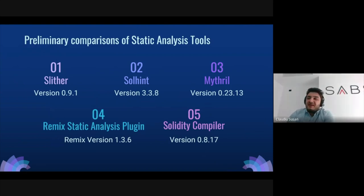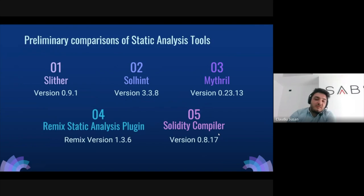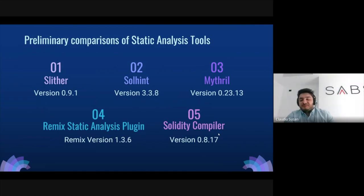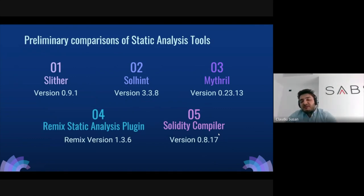We already tested some tools: Slither, Solhint, Mythril, and the static analysis plugin from Remix, along with the Solidity compiler. For a tool to qualify for our study, it had to fulfill two main criteria: work on the latest version of Solidity, and be open source or at least free to use. We only considered Remix's proprietary static analysis plugin, not its integrations with tools like Slither or Solhint. We also chose to include the compiler because we were surprised by the fact that it actually has some good detections.